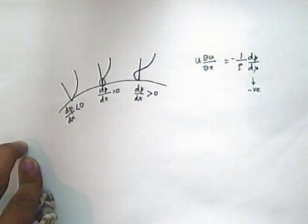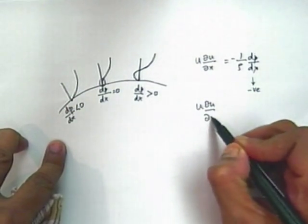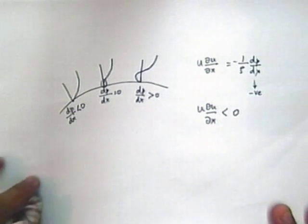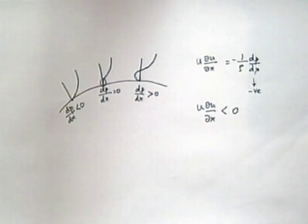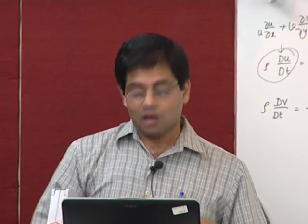When dp by dx becomes 0, u du by dx is equal to 0. This is where you get du by dx is equal to 0. When dp by dx becomes positive, u du by dx becomes negative. What does this mean? U is not negative or du by dx is not negative? Why not u? U also becomes negative, right?